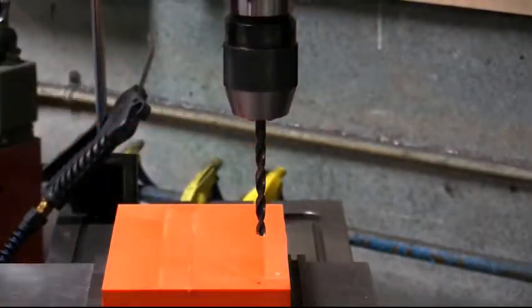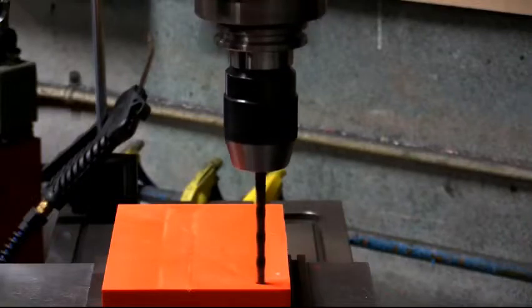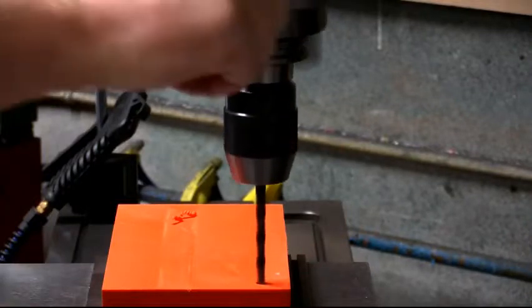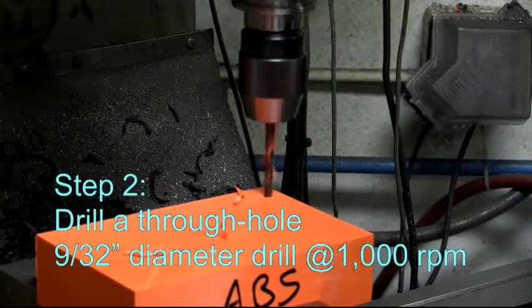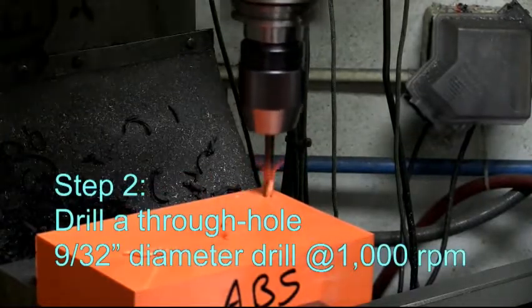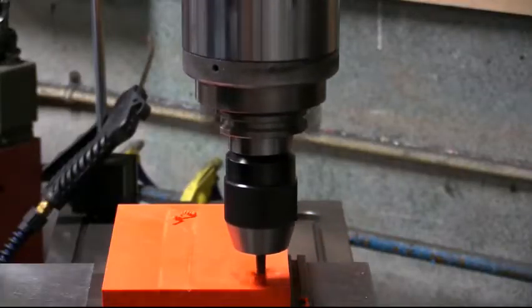Now we've got a 9/32nds diameter drill and we're going to just nice and gentle peck down through there. We don't want it to grab but it's pretty soft and it's just going to cut nice and clean. There we go, we're all the way through.